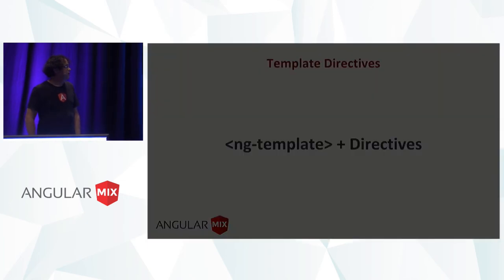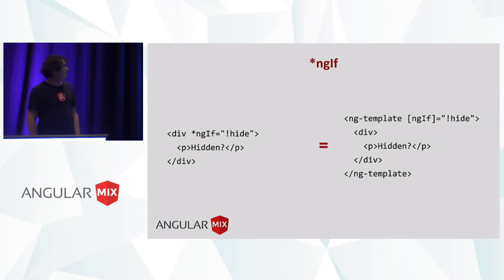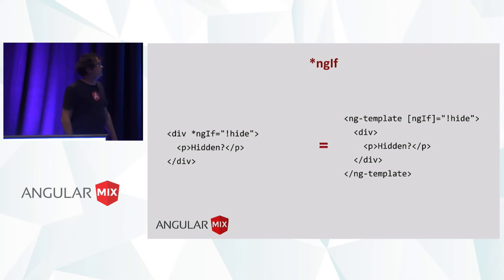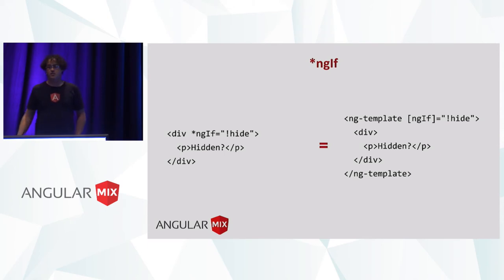It turns out that if you combine templates and directives, you get a nice thing called a template directive — and you've used this before because that's what ng-if is. If you look at a div with an ng-if, what Angular is actually seeing is desugared code: you're actually declaring a template — that's what the star means in ng-if. The template has the directive on it, and the directive gets to control what happens to this template. Does it get rendered or not? Does it get sent to some other part of the application?